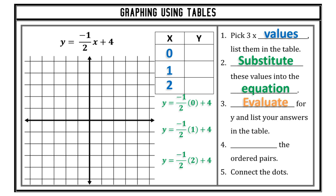I'm going to rewrite each equation with x replaced. So x is 0, x is 1, and x is 2. Now I evaluate for y: when x is 0, y equals 4 (0 times negative 1/2 is 0, plus 4 is 4). When x is 1, y equals 3.5 (1 times negative 1/2 is negative 1/2, plus 4 gives 3.5). When x is 2, y equals 3 (negative 1/2 times 2 is negative 1; negative 1 plus 4 is positive 3). I place all those values into my y column.